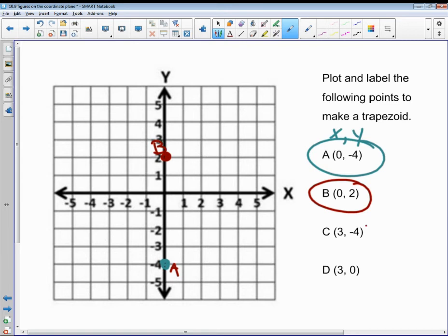Now I'm going to look at c, over three, down negative four. C. And now I'm going to go d, over three, and not up at all. D.